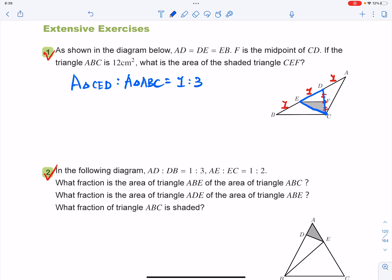Then that means the area of triangle CED equals to the area of triangle ABC divided by 3, which is 12 divided by 3. You got 4 square centimeters.